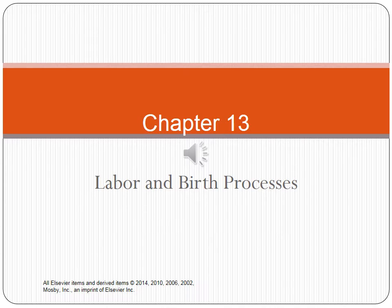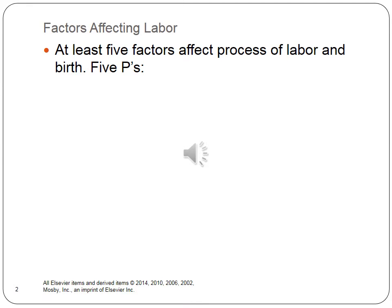Chapter 13: Labor in the Birth Process. There are factors that affect labor. We want to talk about the five P's: Passenger, which are the fetus and placenta; Passageway, the birth canal; Powers, contractions; Position of the mother; and the psychological response, which would be your fetal heart rate, fetal circulation, fetal respiration, maternal cardiovascular changes, and maternal respiration.